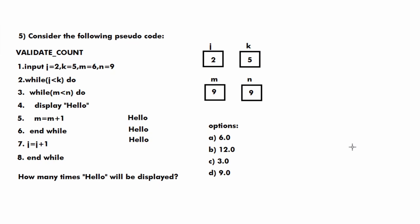After j increments from 2 to 3 and then the outer loop checks j less than k again (3 < 5, true), the inner loop condition m less than n is immediately false since m equals 9 and n equals 9. So we come out of both loops and the program stops. Hello was printed 3 times total, so the answer is 3, which is option C. I hope all the explanations were clear — if you have any doubt please let me know in the comments, and don't forget to subscribe. Thanks for watching.